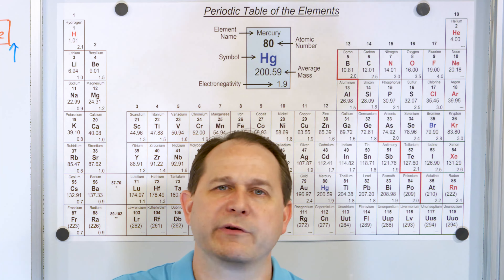There's a periodic nature to the elements, and the reason is because of how the electrons are situated around these atoms. Now I need to give you more definitions. The periodic table consists of rows and columns, but we don't call them rows and columns.